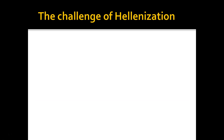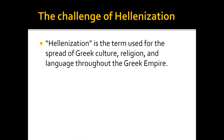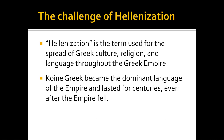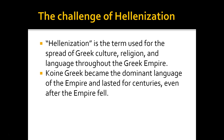One of the things we have to think about, particularly during the period of the Greek Empire, is the issue of Hellenization — the spread of Greek culture, religion, and language throughout the Greek Empire. It made it possible for people to communicate, do commerce, and travel widely, because Koine — Common Greek — became the dominant language of the Empire and lasted for centuries, even after the Empire fell. Our New Testament would have been written in Koine Greek.